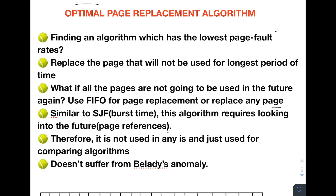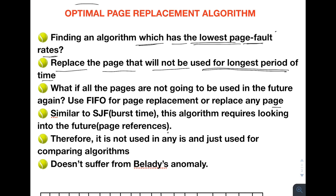Now, if you have to find an algorithm with the lowest page fault rates, how would you design it? One approach is to replace the page that will not be used for the longest period of time. When all frames are full, among the pages already in the frames, you select the one that will not be used for the longest period — that is the victim frame.